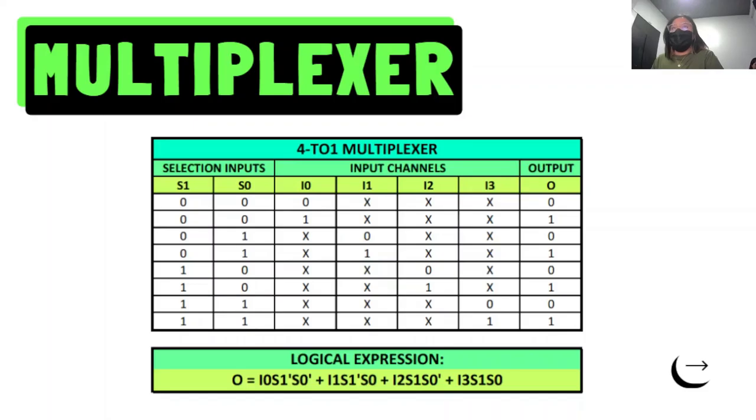are S1 and S0, input channels are I0, I1, I2, and I3, and a single output. Here are the values for each of the inputs and outputs. If we get zero one for inputs S1 and S0 and for the channels X0 XX we get an output of zero. So the logical expression is placed here below. O equals to I0 S1 bar S0 bar plus I1 S1 bar S0 plus I2 S1 S0 bar plus I3 S1 S0.